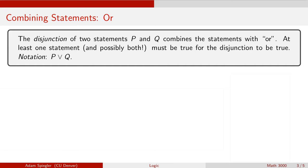Another way that we can combine two statements is with what's called the disjunction of two statements, and that's by combining them with an OR. When we combine two statements with an OR, P OR Q is going to be a true statement as long as at least one of the statements is true. The notation we use for OR is we flip the AND symbol upside down, so it looks like a V. This means P OR Q is how we would read that in mathematics.